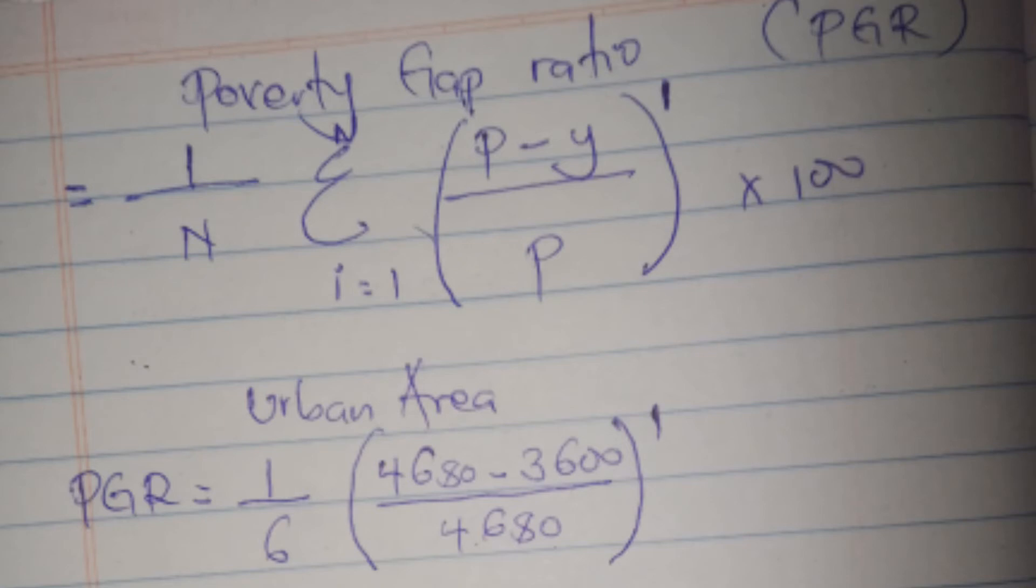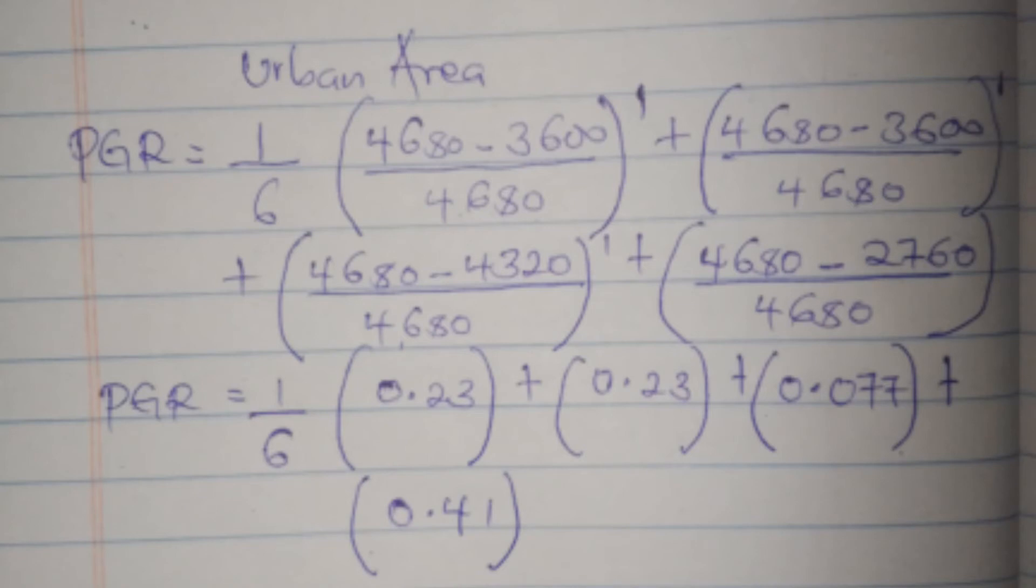Minus the income of the first individual that is living below the poverty line, which is 3600, out of the poverty line which is 4680. Then we do the same thing in the other brackets - 4320, and so on, for everyone that is living below the poverty line in the urban area.